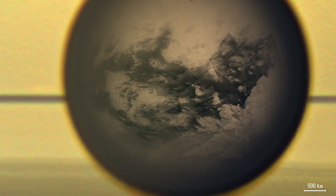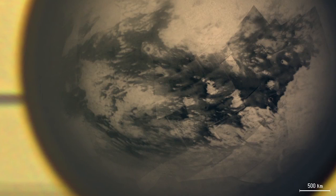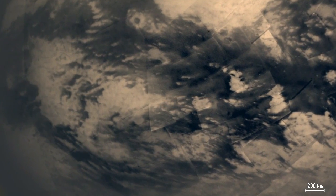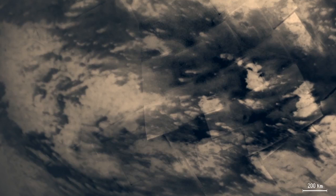Features on Titan's surface appear. The dark regions along Titan's equator are mostly dune fields. The brighter regions are highlands a few hundred meters high.